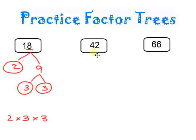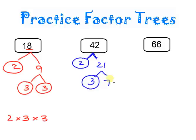Over here we have 42. I always like to start with 2. So 2 times 21 is 42, but 21 is not prime because 2 plus 1 is 3, so 3 goes into it. 3 times 7 is 21. Both 3 and 7 are prime, so I can write 2 times 3 times 7. How do you know when to stop? The problem tells you — once I've circled my last two numbers, I can't break them up anymore.